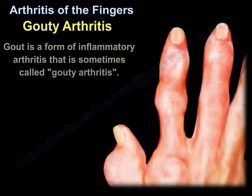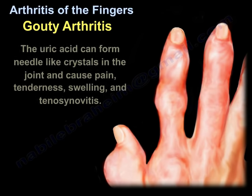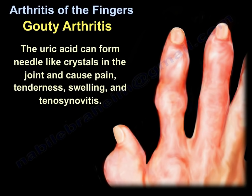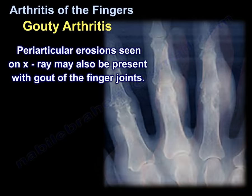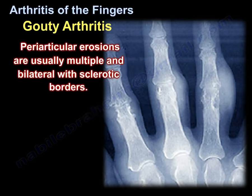Gout is a form of inflammatory arthritis, sometimes called gouty arthritis. It will mimic infection and may develop in people who have high levels of uric acid in the blood. The uric acid can form needle-like crystals in the joint and cause pain, tenderness, swelling, and tenosynovitis. Periarticular erosions seen on x-ray may also be present with gout of the finger joints, and are usually multiple and bilateral with sclerotic borders.